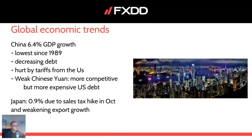China is at 6.4% at the moment, and despite being a pretty high rate, it is the lowest since 1989. It is hurt by the tariffs from the US. Japan will also see a potential sales tax hike in October, and that could weaken some export growth, which is not good for the global economy. It could slow down consumption, which would slow down growth rate, and slow down imports as well — in any case, slow down business activity.